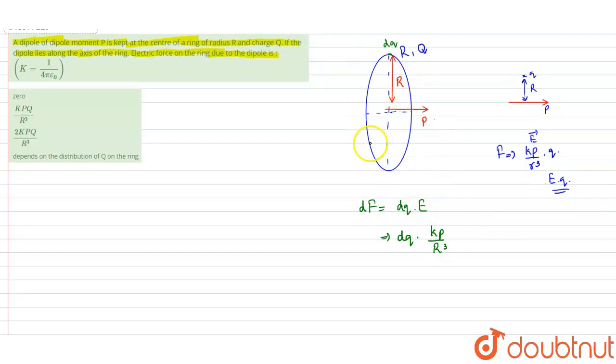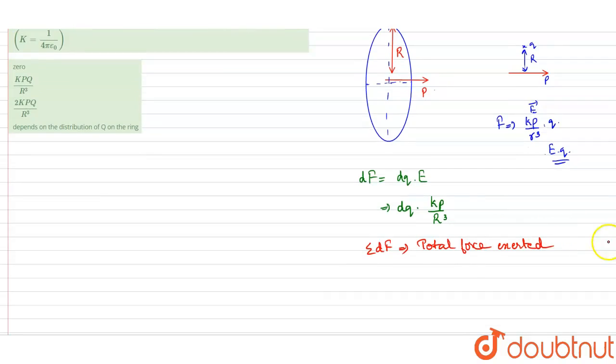Now we have to find the total force on this ring due to this dipole. The total force will be the summation of this. So the summation df will be the total force exerted.